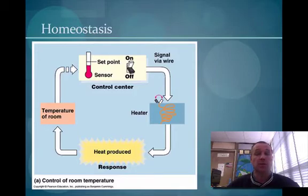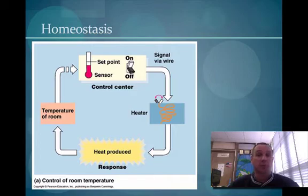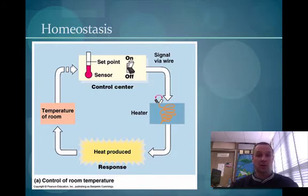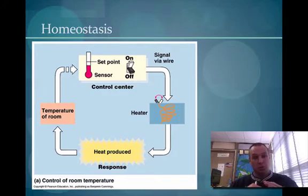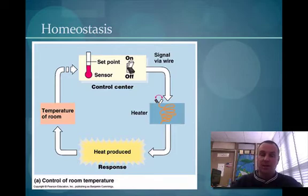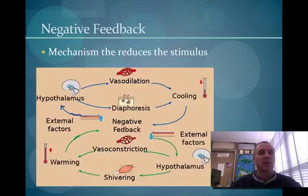Homeostasis means to maintain a balance. In your house, you have a set point for what temperature you want the house kept at. If the temperature falls below that set point, a signal is sent to the heater to turn on, produce heat, and as the heat raises the room temperature, it goes up to that set point and is cut off. That mechanism is very similar to what we call a negative feedback loop.